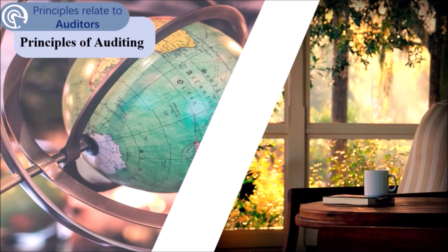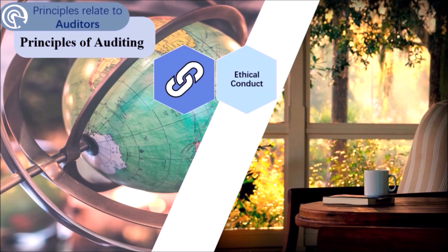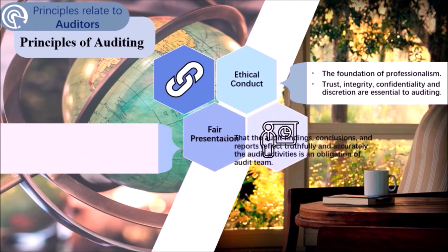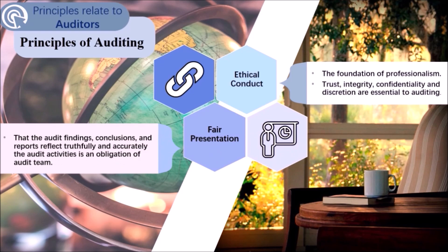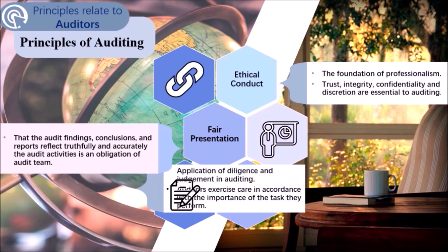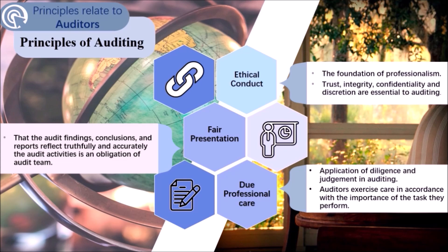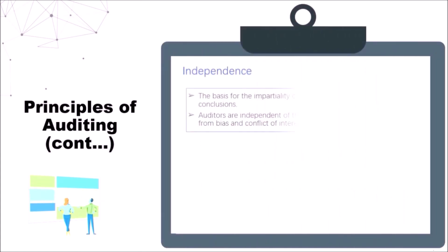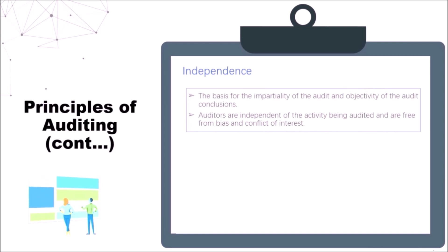We can't conduct auditing without following principles, just as we can't draw a circle without a compass. The first principle is ethical conduct, which asks for the foundation of professionalism and trust — integrity, confidentiality, and discretion are essential to auditing. In fair presentation, audit findings, conclusions, and reports must reflect audit activities truthfully and equitably. Regarding due professional care, auditors should apply diligence and judgment during auditing according to the magnitude of tasks they perform. The principle of independence provides the basis for impartiality and objectivity of audit conclusions, as auditors are independent from the activity being audited and free from bias and conflict of interest.